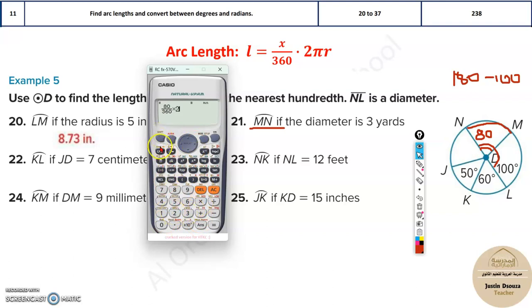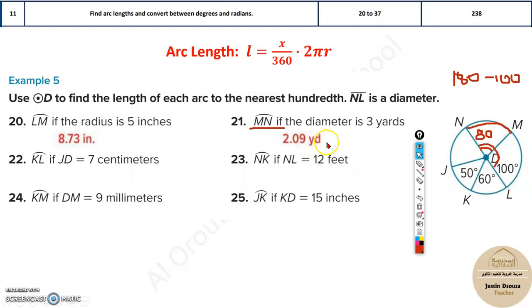Multiply it with 2π, and the radius is not 3, radius is 1.5. Diameter is 3. Don't make the mistake. It'll be 2.09 yards. So yards is a unit of measure as well. So now similarly, you can do the other problems and check the answers.